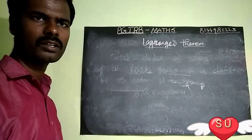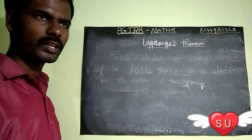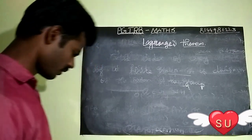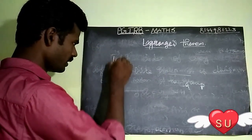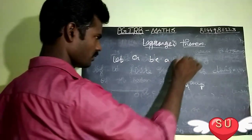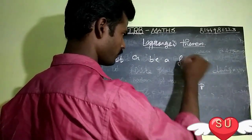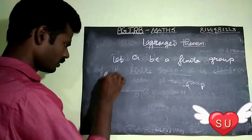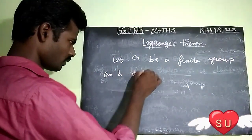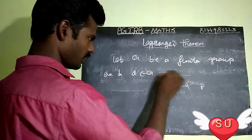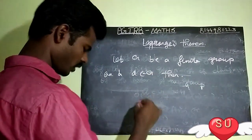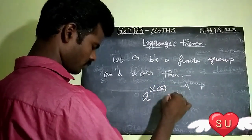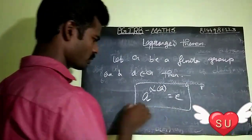So the theorem is correct. The last key point is: let G be a finite group, and let a belong to G. Then by Lagrange's theorem, a to the power of the order of G equals the identity.